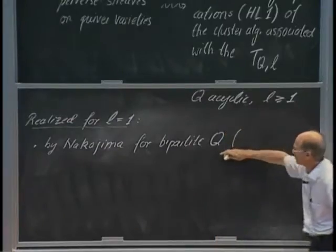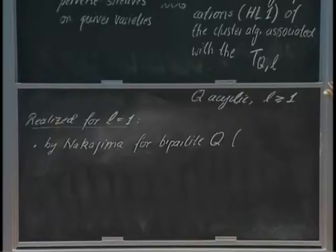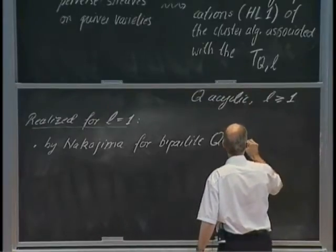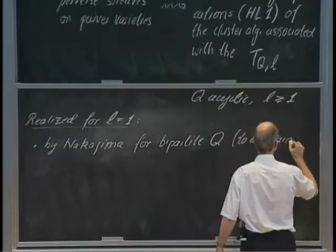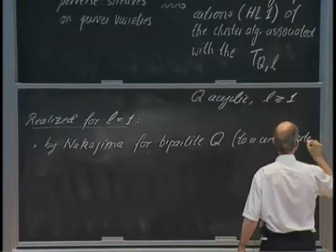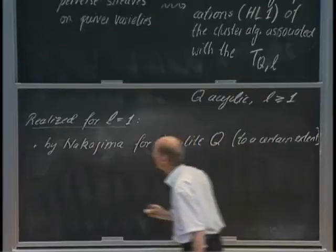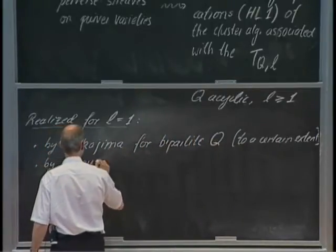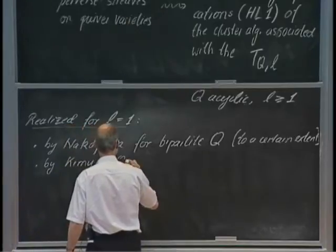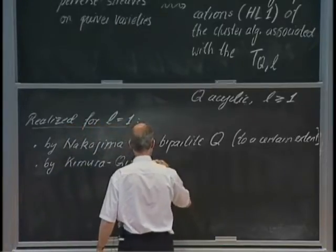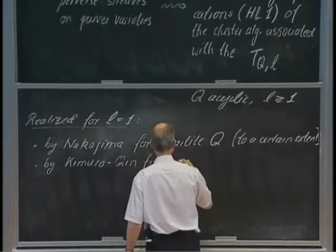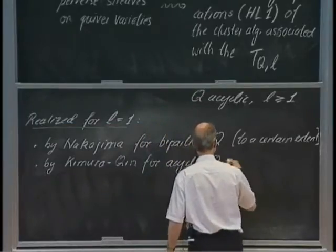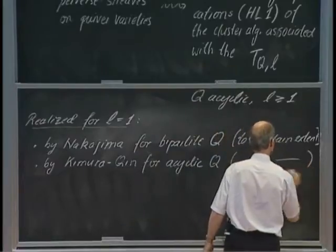And to be quite precise, Nakajima did not prove the full categorification statement, but he proved enough to get strong positivity. So he proved this to a certain extent. And his work was generalized to the acyclic case by Kimura and Qin for acyclic quivers with the same caveat.